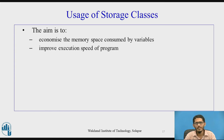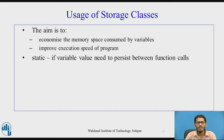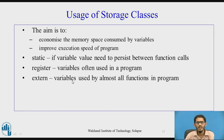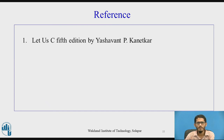Whenever we declare variables, our main aim is to economize the memory space consumed by variables and to improve the execution speed of the program, using memory in an optimum way. A variable should be declared as static only if the value needs to persist between different function calls. The register storage class should be used only when variables are used very frequently in a program. The external storage class can be used for variables that are used by almost all functions in the program. Finally, the auto storage class can be used when none of the above situations apply. This is the reference used for the video lecture. Thank you.